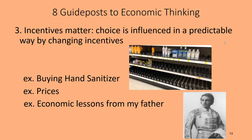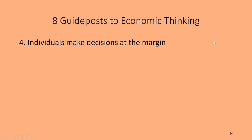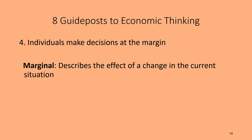The fourth guidepost: individuals make decisions at the margin. When we say 'marginal' in economics, we're describing the effect of a change in the current situation — comparing two options or going from the current situation to a new one. The marginal cost is the change in the bad things that happen when you move to the new situation, and the marginal benefit is the change in the good things that happen.